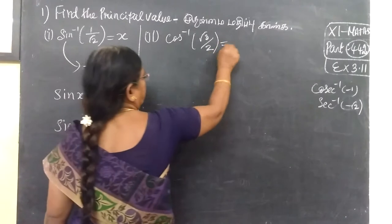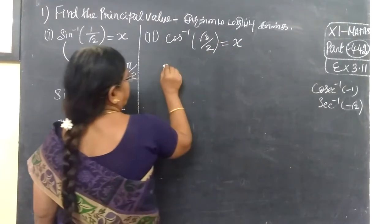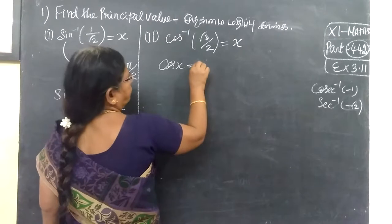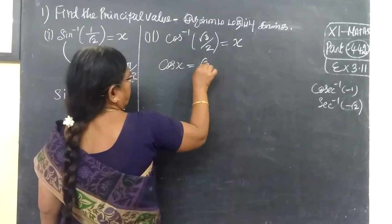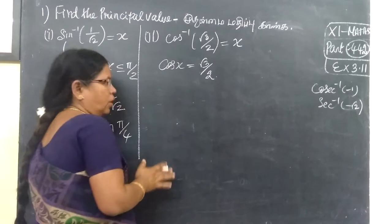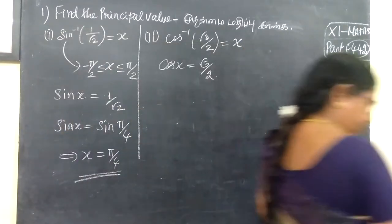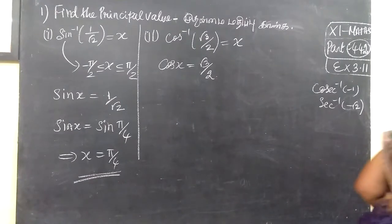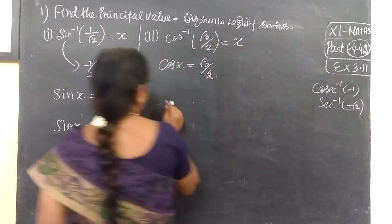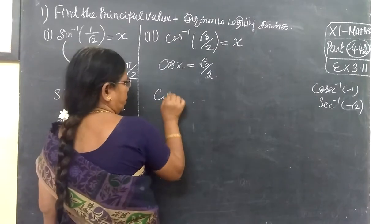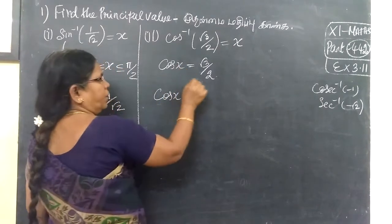Cos is equal to some x sub minus x. Therefore, cos x involves root 3. Looking at cos x — here it is given, cos only. Therefore, this is cos x and this is the angle.